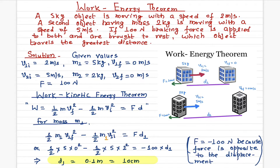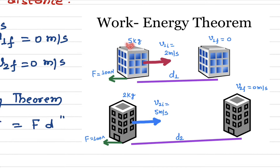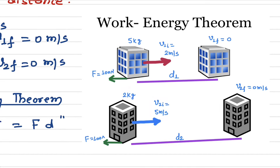In this video I will talk about the work-energy theorem and explain it using a numerical problem. Let's assume we have two objects. The first object has a mass of 5 kg and is moving at 2 meters per second. The second object has a mass of 2 kg and is moving at 5 meters per second. An equal braking force — a friction force — of 100 newtons is applied to both objects.